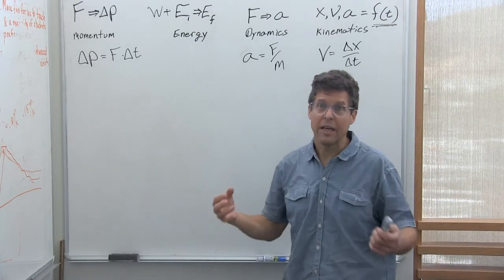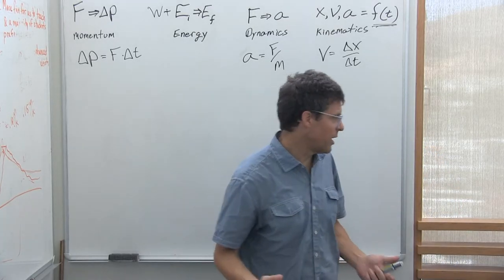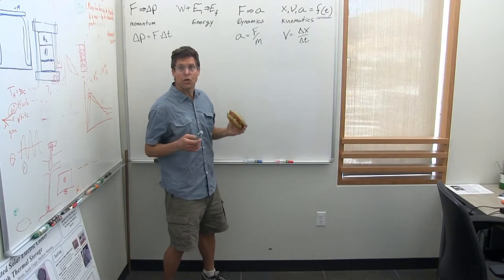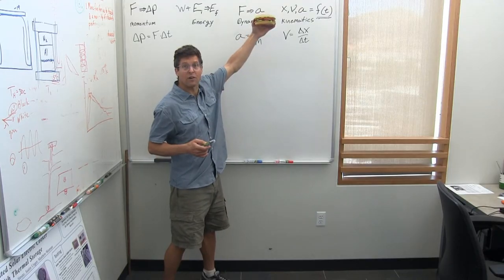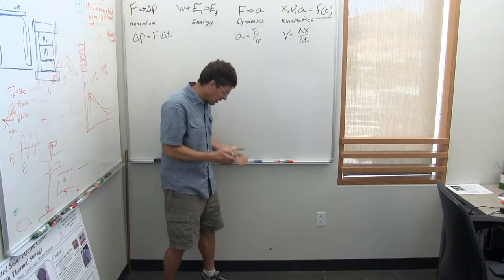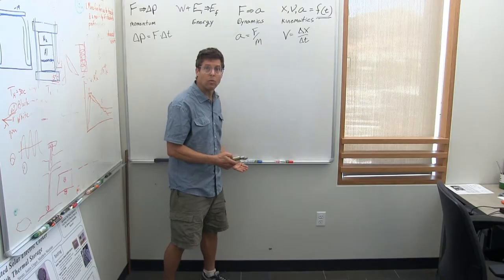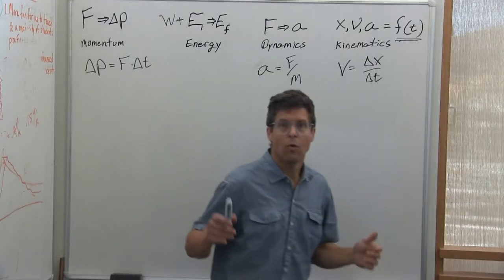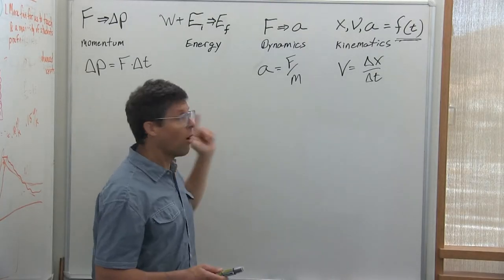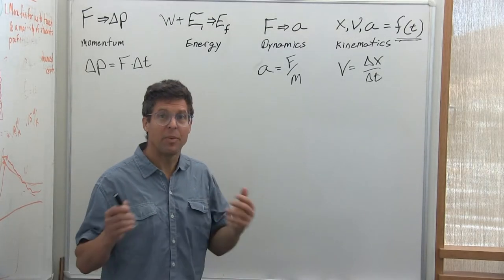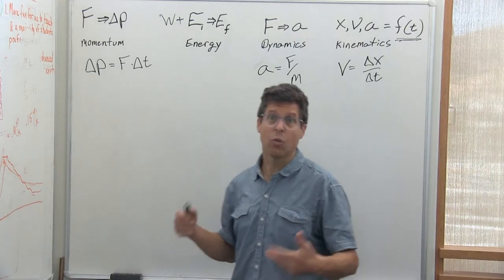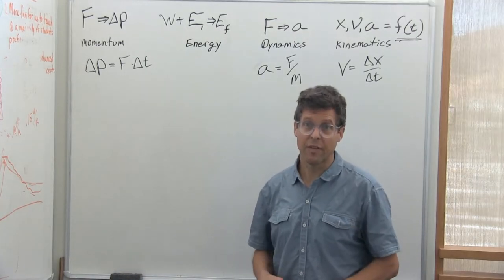So how does this pan out in a real situation? Let's say you drop a massive object off a cliff and it accelerates to the ground below. We can examine this event with all four lenses, but depending on what you're looking for, a different lens will be more helpful than the others.